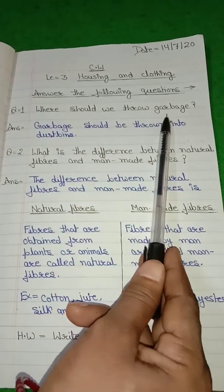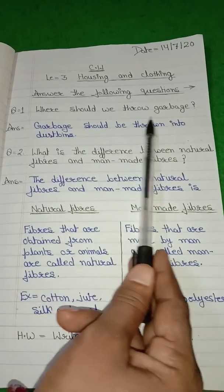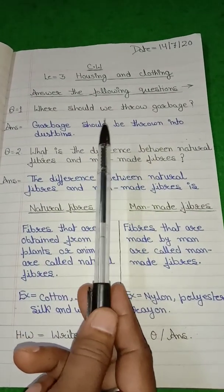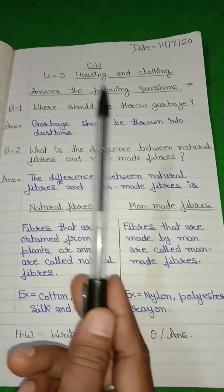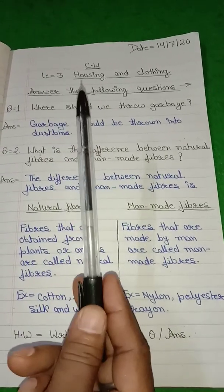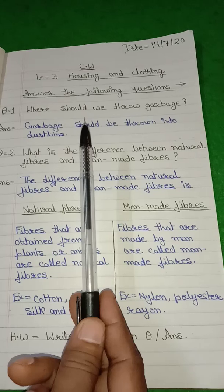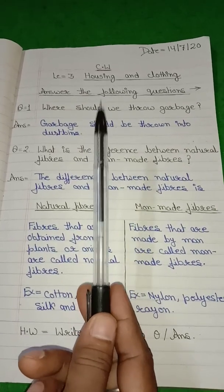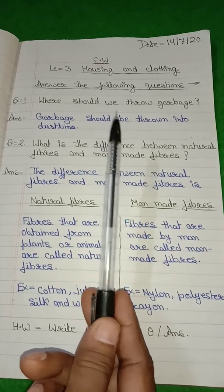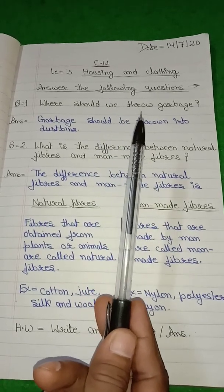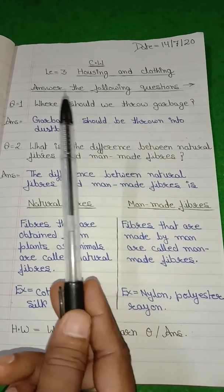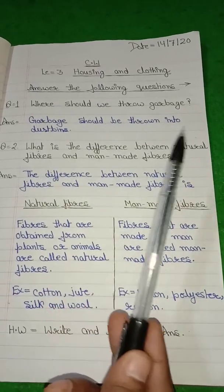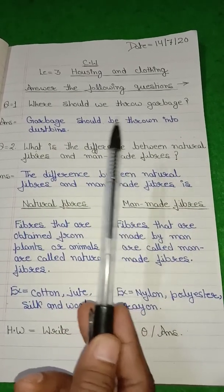Hume garbage kahaan pe feknaa chahiye? As I have already explained in the chapter, garbage should be thrown into the dust bin. The dust bin should be kept covered with a lid. A dust bin left uncovered can spread various types of diseases.